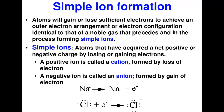How does a simple ion form? Atoms gain or lose enough electrons to achieve the electron arrangement identical to the nearest noble gas. In the process, they form simple ions. The number of protons does not change — only the number of electrons changes. Simple ions are atoms that have acquired a net positive or net negative charge by losing or gaining electrons, respectively.